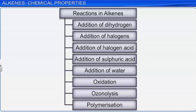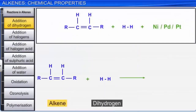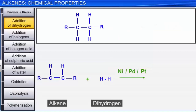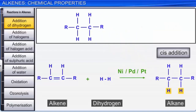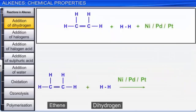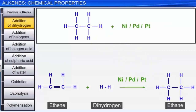Let's start with the addition of dihydrogen to alkenes. Alkenes react with dihydrogen in the presence of catalysts like finely divided nickel, palladium, or platinum to form alkanes. Such addition reactions are always cis addition reactions. For example, ethene in the presence of finely divided nickel, palladium, or platinum yields ethane. Similarly, propene yields propane.